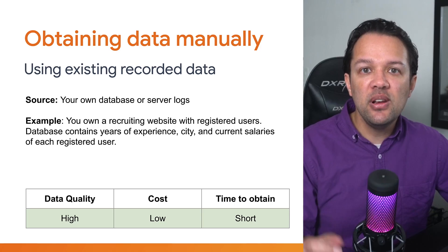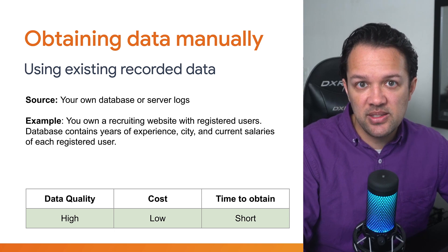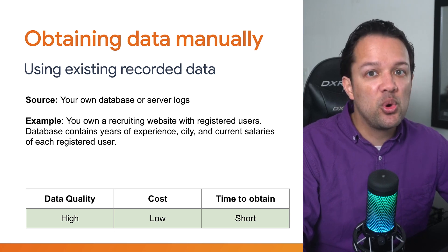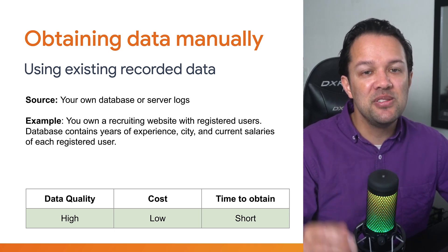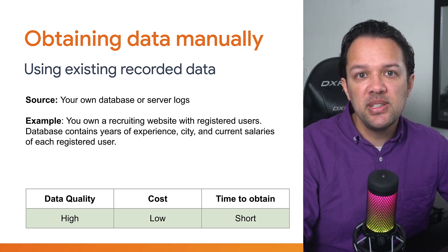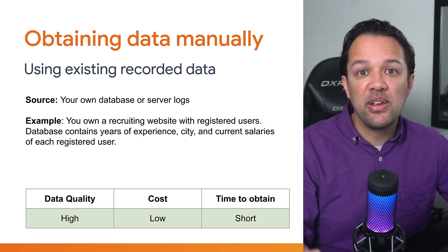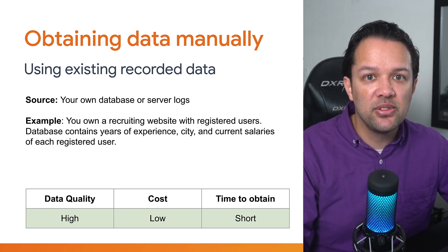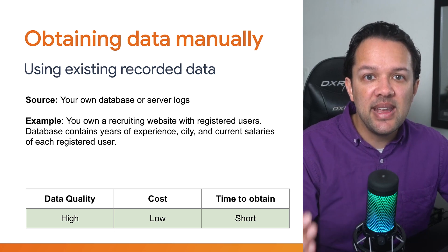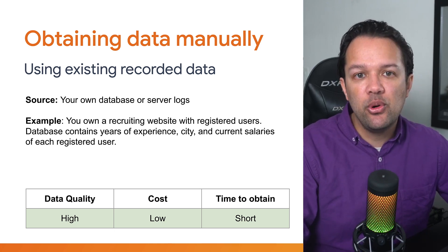But how do you obtain such data in the first place? If you're lucky, you may already have the data contained in your existing systems, recorded in a form that can be directly used to train a model. Common sources include databases or server logs that you have control of or are allowed to use, and which contain the features and attributes that you require in the right form.